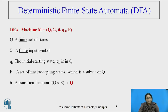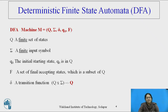Deterministic finite automata is a machine with five tuples, where Q indicates a finite set of states, the alphabet indicates a finite set of input symbols, Q0 is the initial or starting state which belongs to Q, F is a set of final or accepting states which is a subset of Q, and delta is a transition function. The machine in any state, by processing a single symbol at a time, either remains in the same state or moves to the next state.